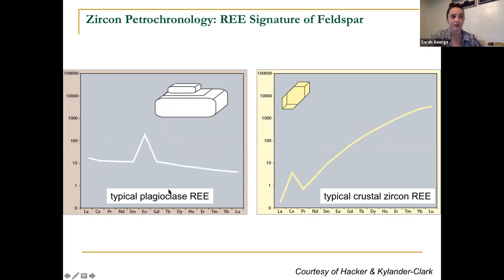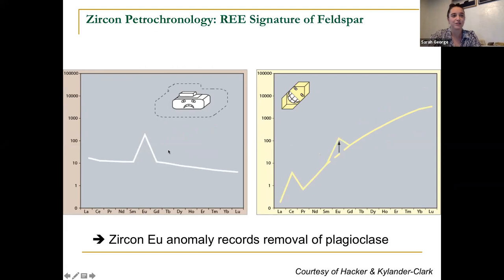We can do the same game with plagioclase. Plagioclase has a very strong europium anomaly, so if we're breaking down plagioclase, zircon is going to incorporate that kind of europium anomaly.